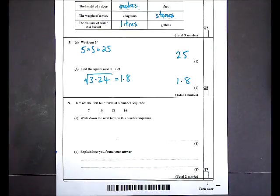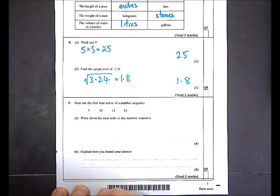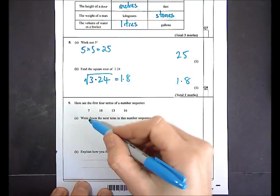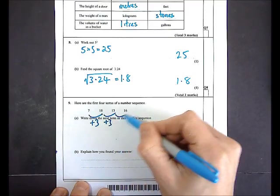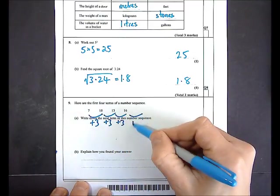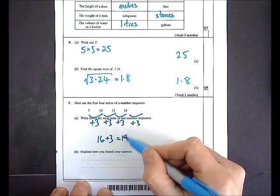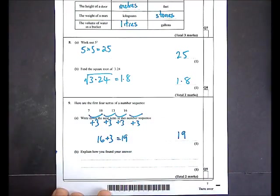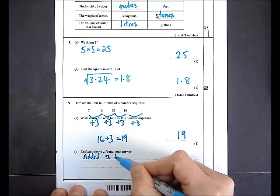In question 9 I'm given the first four terms of a number sequence: 7, 10, 13, 16. I can see that each time I'm adding 3, so the next term would be 16 plus 3, which is 19. In part B I must explain how I found my answer — I added 3 to the previous term.